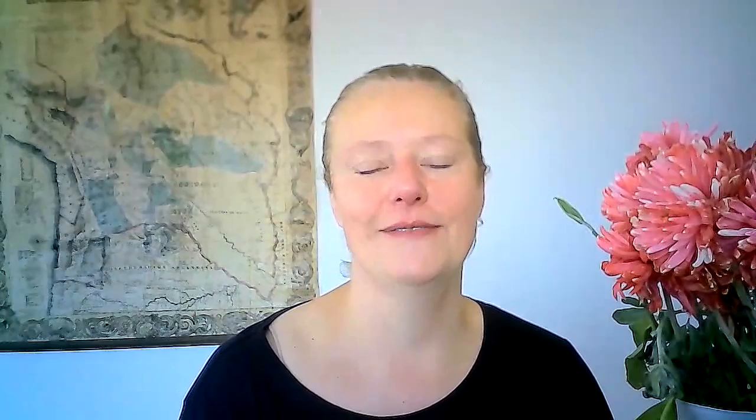Trick number two: use an events paragraph. This is probably my favorite way of getting through time. An events paragraph is a device that will get you through a big or small chunk of time without having to give a single scene, and it gives your reader the sensation that they've actually lived through this period of time with you — in only a paragraph. To use one, you start by making a point in your first sentence, such as "it was the worst summer of my life." Then every sentence that follows describes one event.